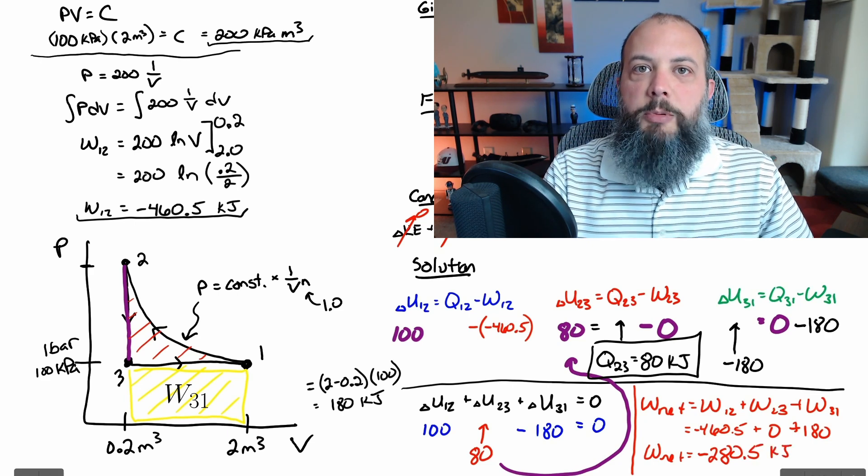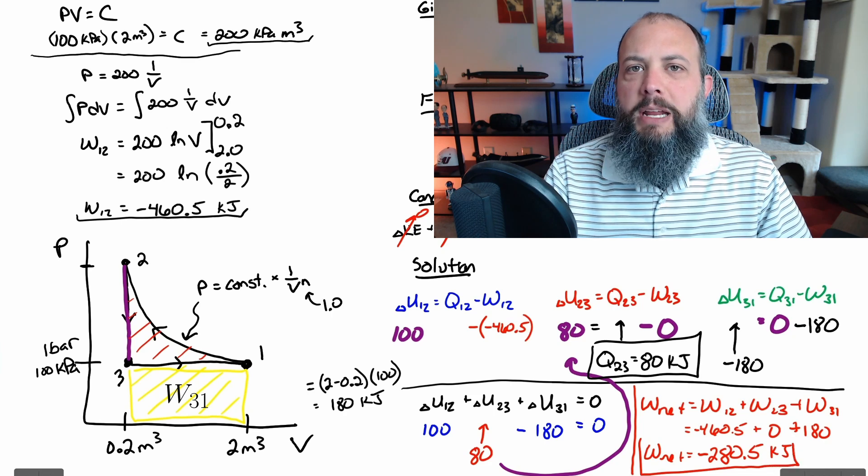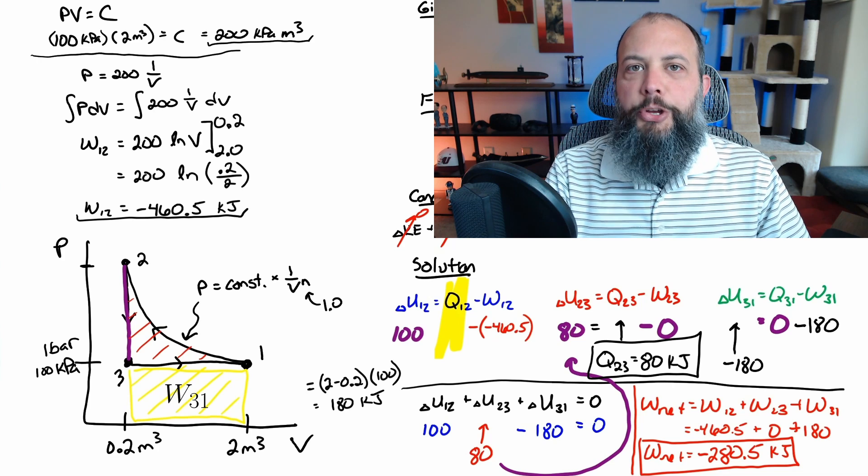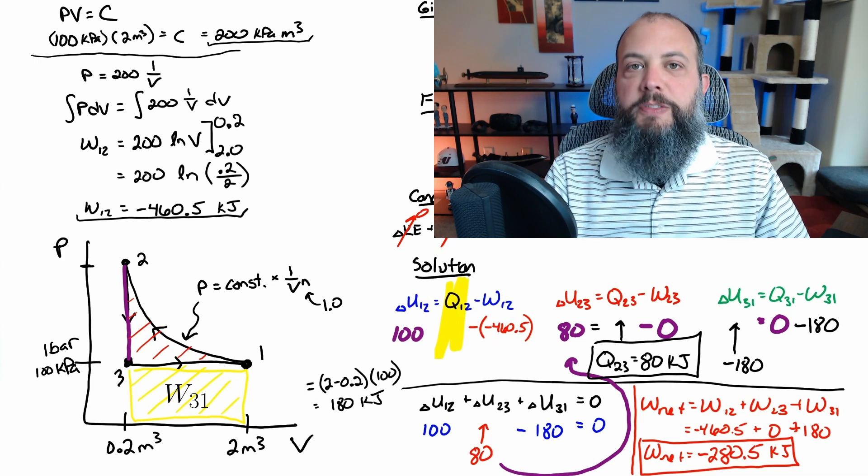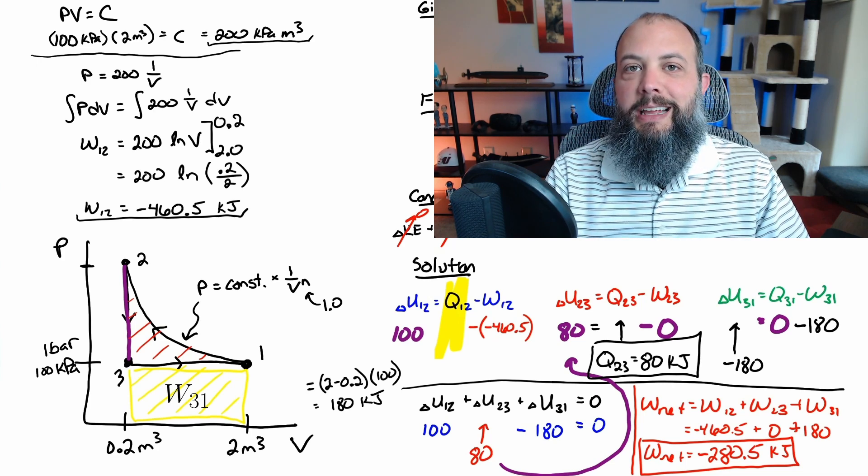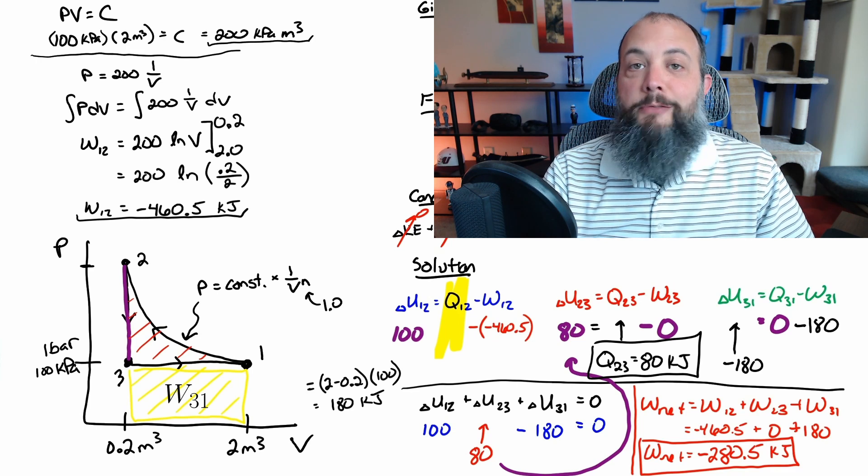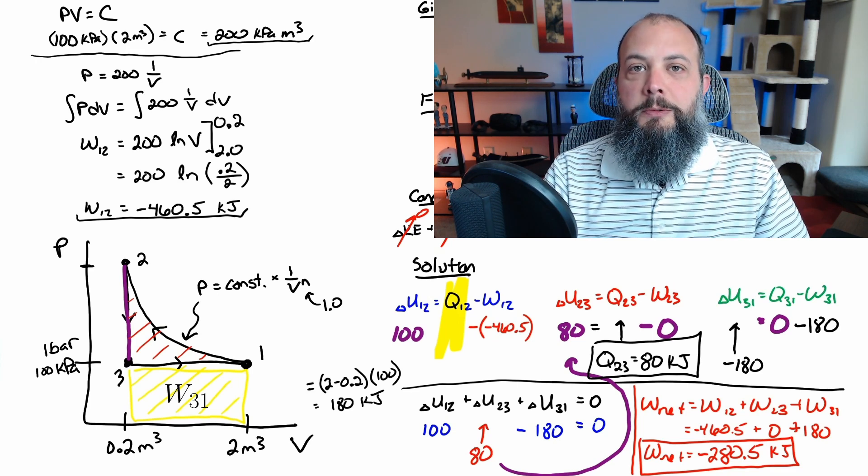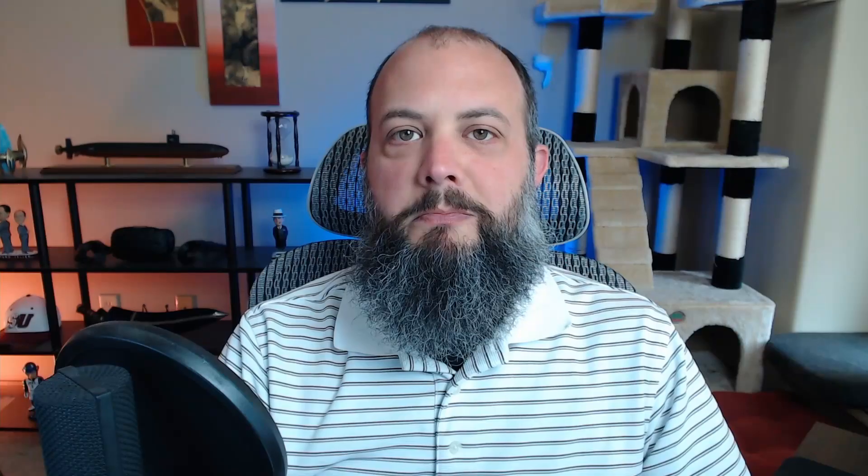All right well let's actually just finish this problem now we get a net work of negative 280.5 kilojoules now I mentioned at the beginning that I recommended always starting with all three equations and just hopping around and just finding whatever you can easiest and worth mentioning here that I never ended up finding Q12 that's the heat for process one to two could do that pretty easily it's negative 360 but no one ever complained about saving five seconds on a problem.